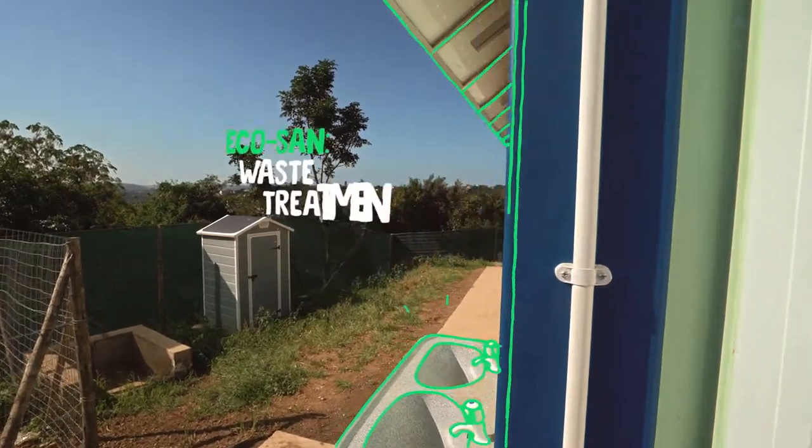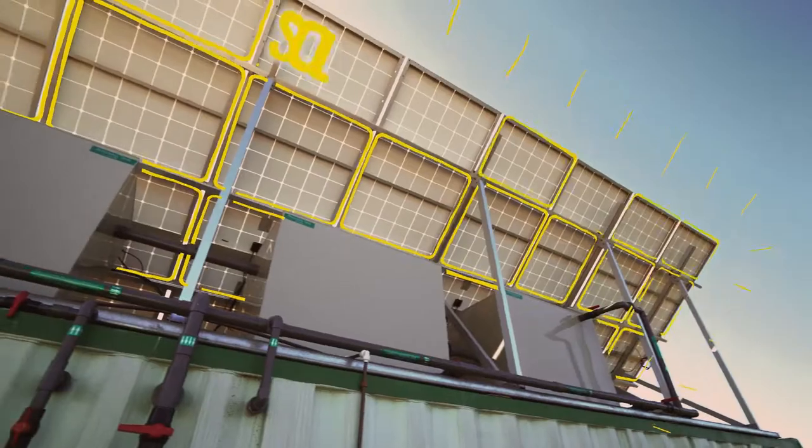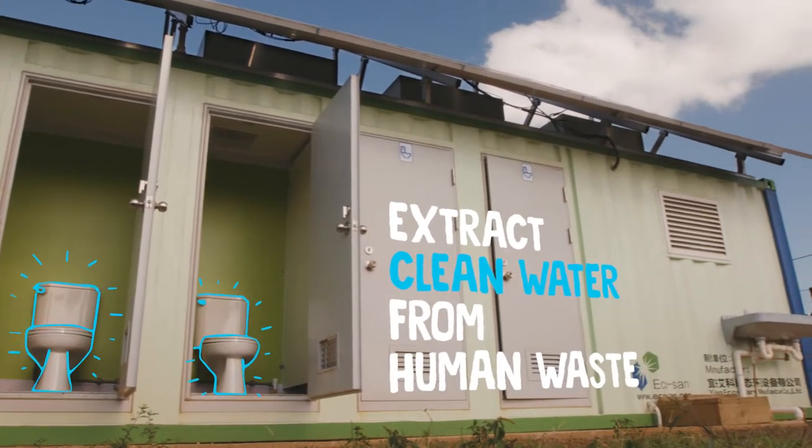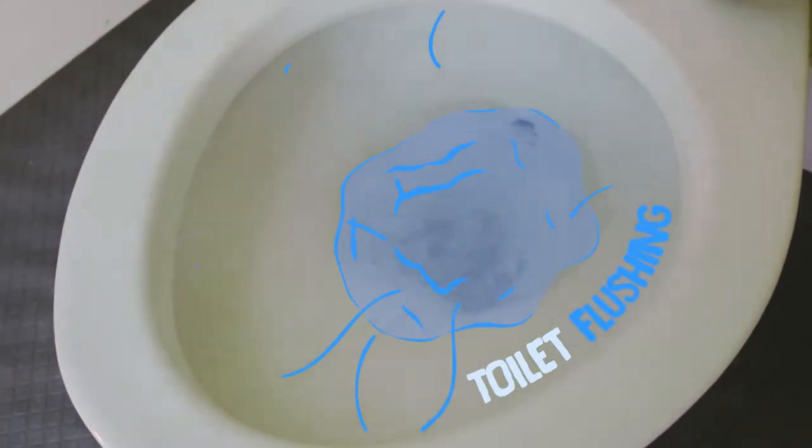The EcoSan Waste Treatment System by Caltech uses energy from solar panels to extract clean water from human waste. This water is reused for toilet flushing.